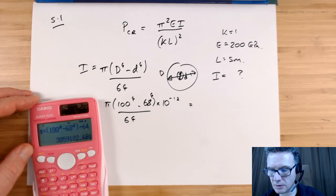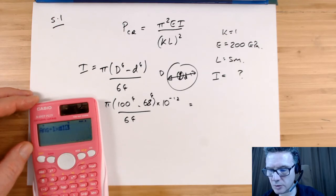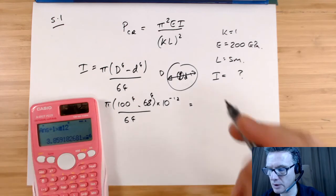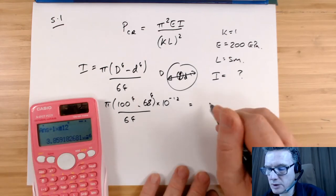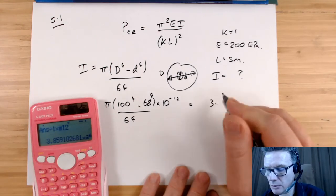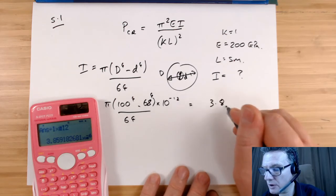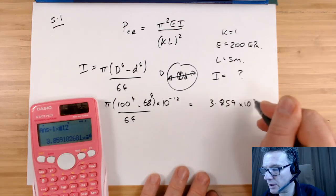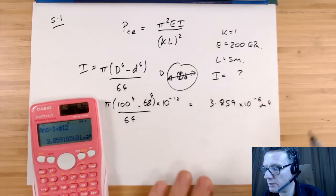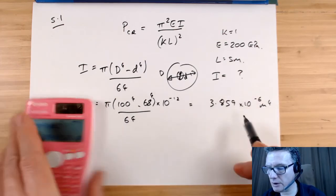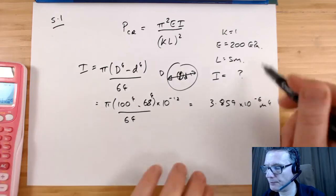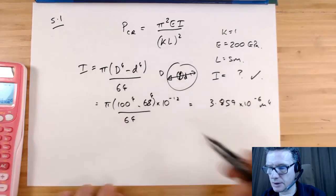This is going to be divided by 10 to the 12, so meters to the power 4. That gives me 3.859 times 10 to the minus 6 meters to the power 4. So I've now got my I.